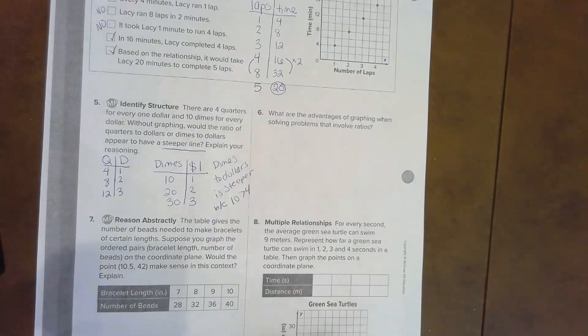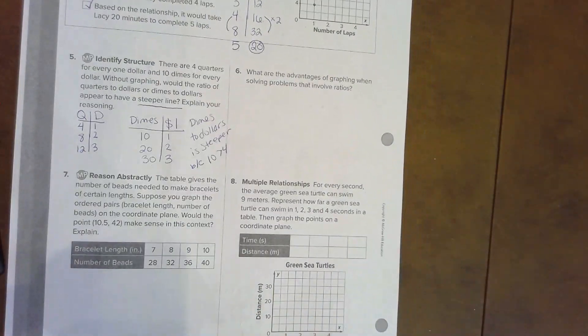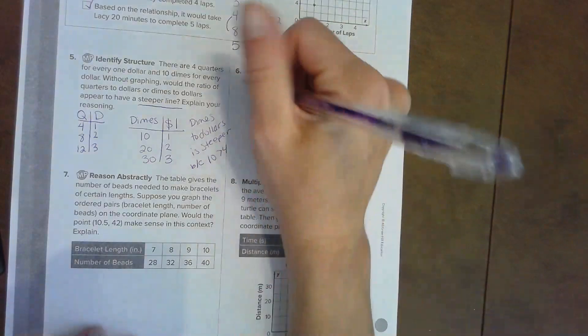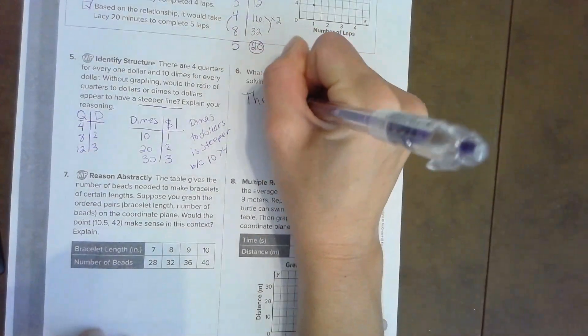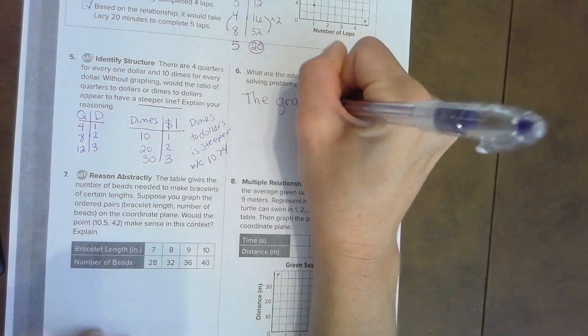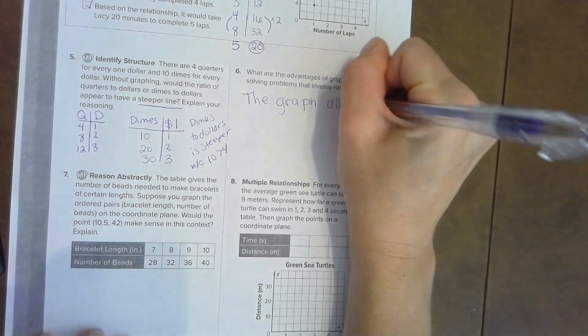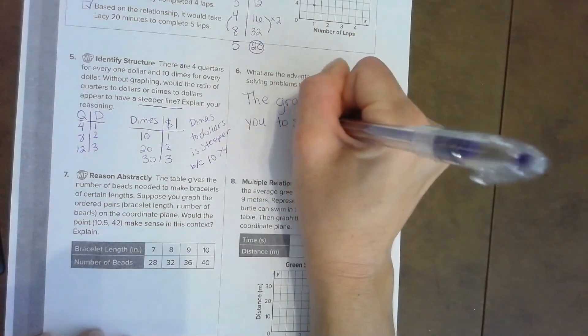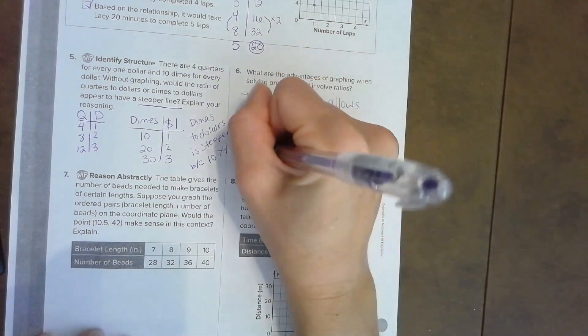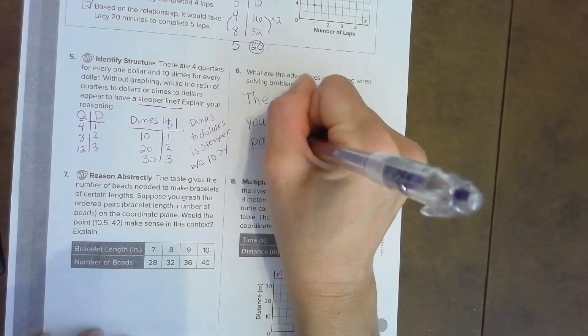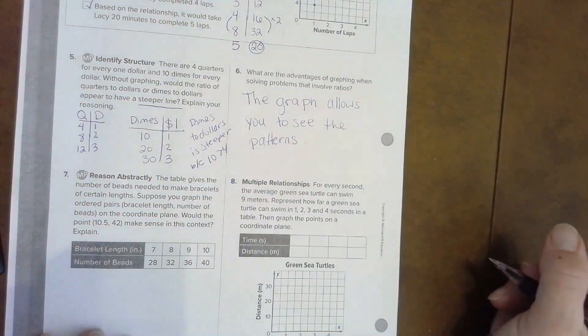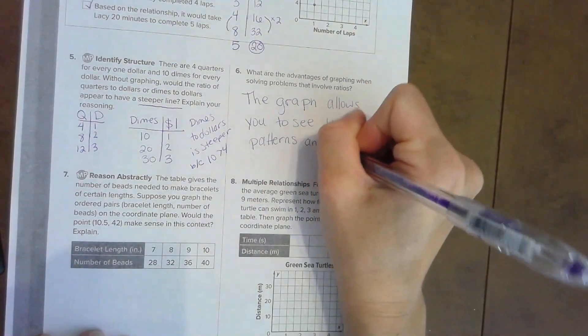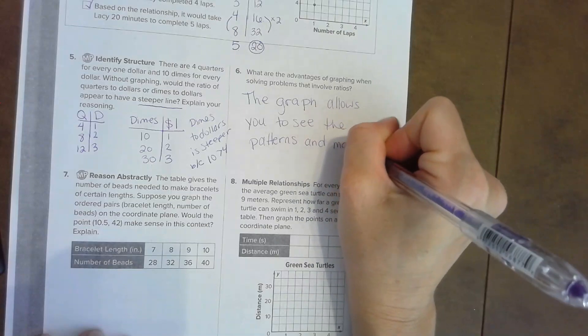Let's talk about number six. What are the advantages of graphing when solving a problem that involves ratios? We can use the graph above to answer this. The graph allows you to see the patterns, and it also helps you make predictions.